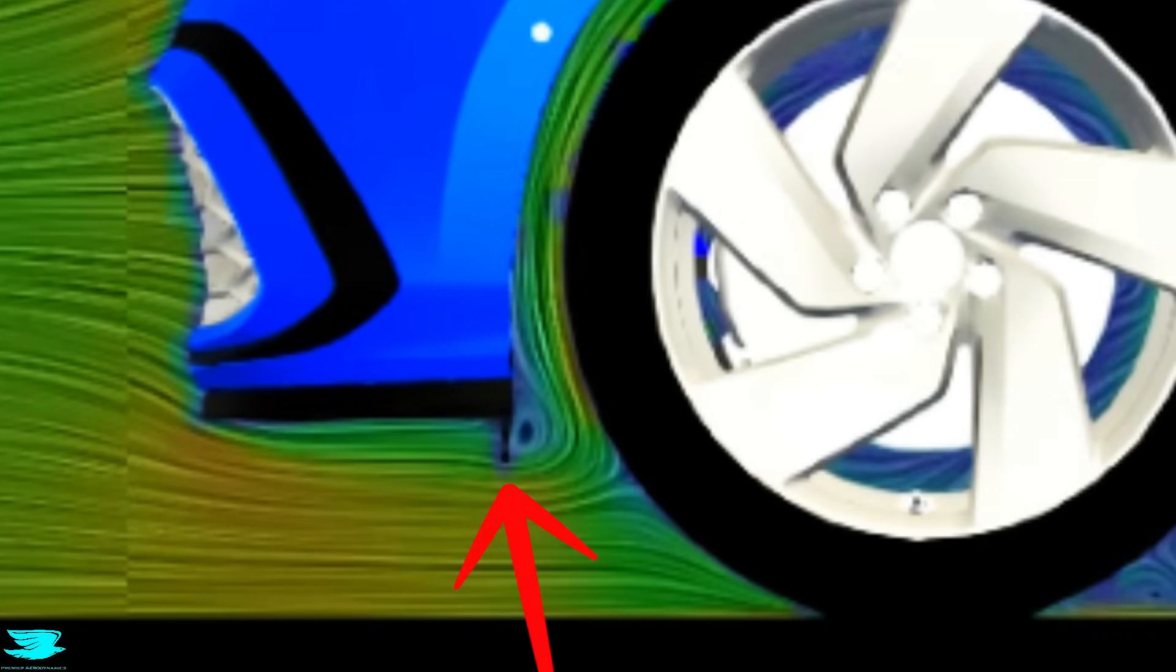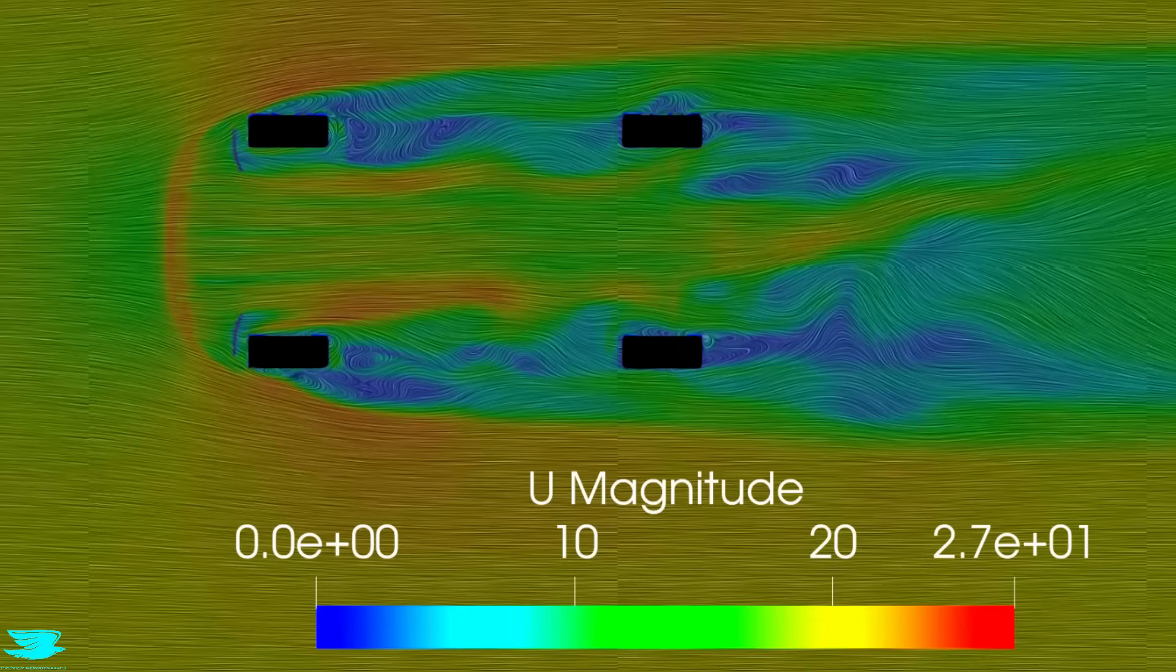We also see the front wheel spoiler, which is this flat plate here, extending down. The idea of this plate is that it directs the flow around the front wheels, so less flow hits the front of the tire. We can't see in this plane if it actually does that, so let's look underneath instead.